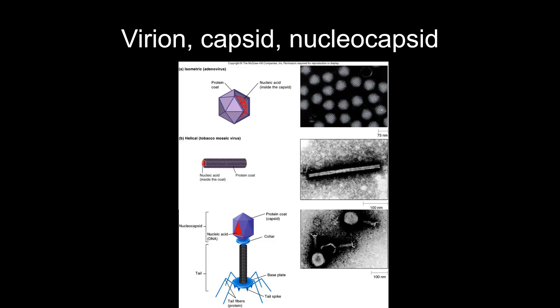A virion is one complete viral particle. The tobacco mosaic virus would be one virion. An adenovirus — viruses that very often cause respiratory infections — is a naked virus, but that's still one virion. For phage, the whole entire structure with the tail and the head is all one virion.